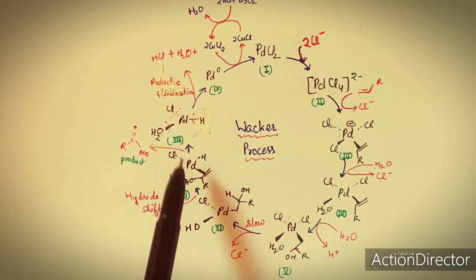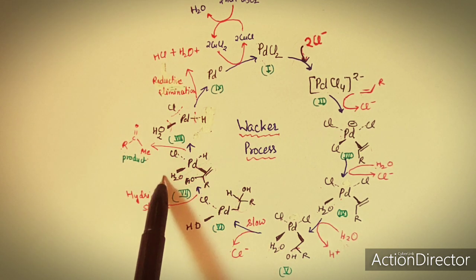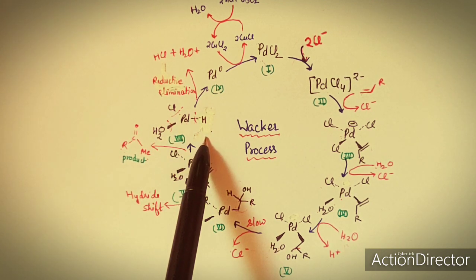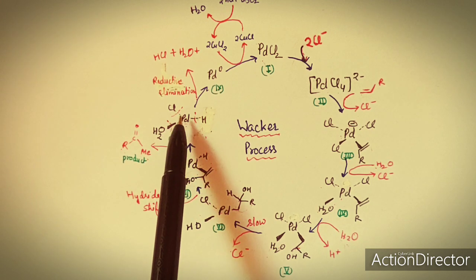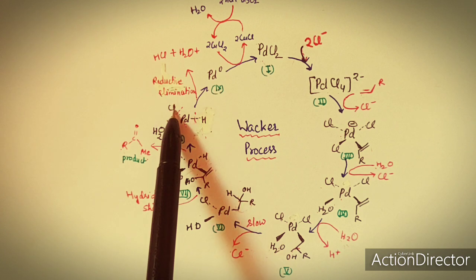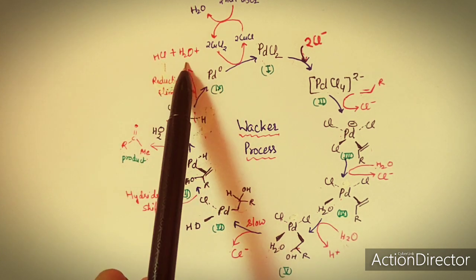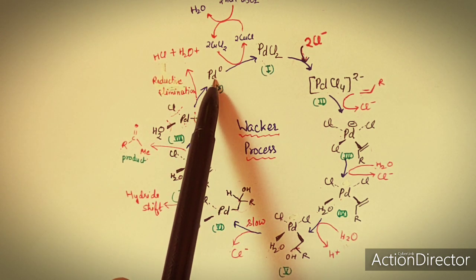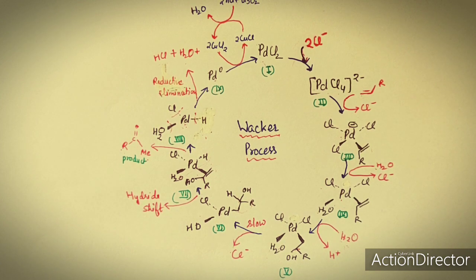After product elimination, the remaining species contains Pd with H₂O, Cl, and H. Reductive elimination then takes place: H and Cl form HCl, H₂O also eliminates, and palladium is converted to Pd⁰.